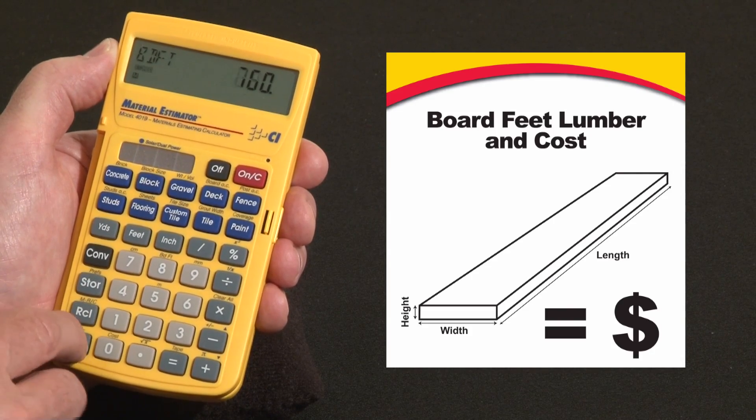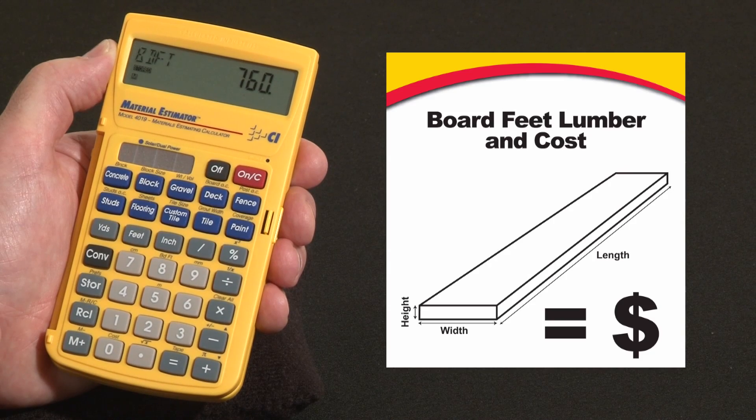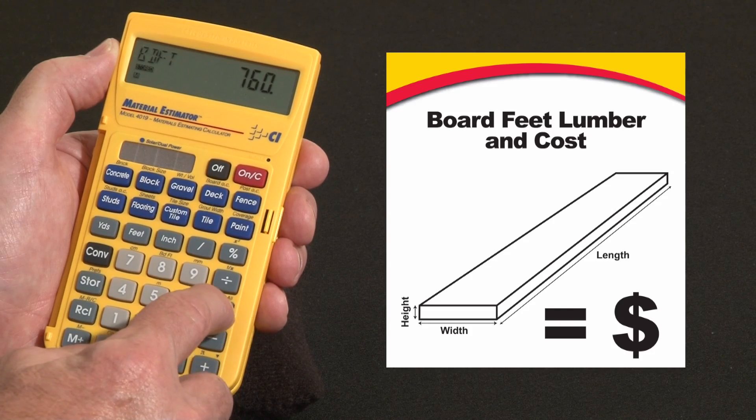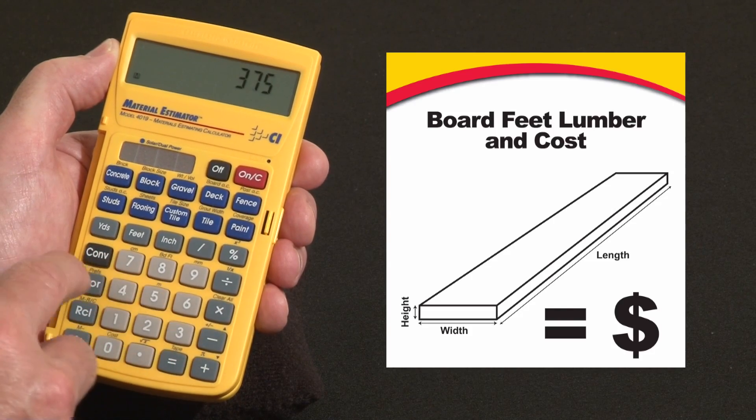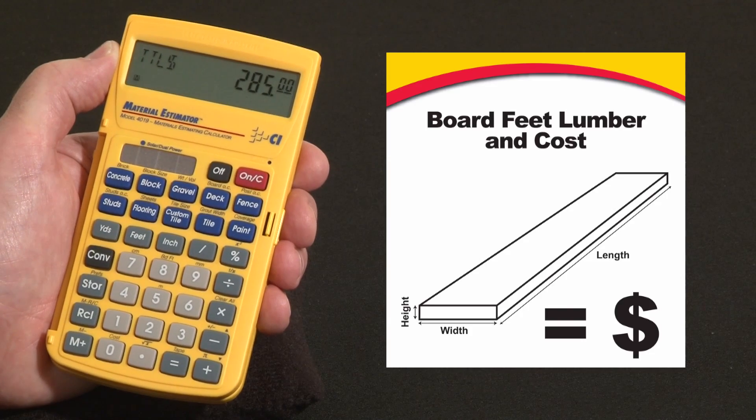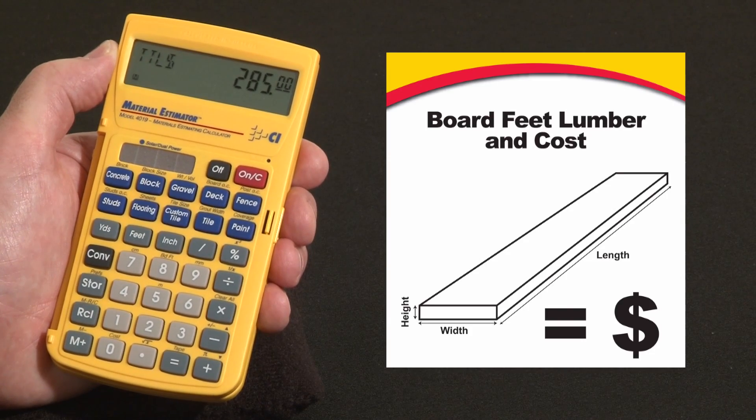Now I can recall that total out of the memory. I need 760 board feet total. If my cost on this is about $375 per 1,000 board feet, I can just say times 375. Hit convert and over the 0 key it says cost. It gives me a cost of about $285 worth of lumber there.